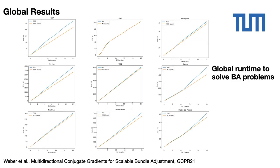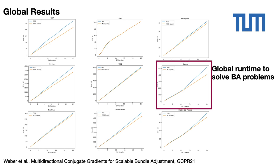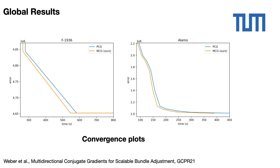Now we present the total runtime with respect to the number of bundle adjustment iterations for each bundle adjustment problem. The blue color corresponds to the PCG algorithm, the orange one to our MCG algorithm. Graphically it is clear that MCG competes with PCG in the worst case — see for example the second top graph — and greatly outperforms PCG in the best case — see for example the third middle graph. The convergence plots of total bundle adjustment cost for two datasets illustrate the fact that MCG and PCG give the same error at each bundle adjustment iteration, but MCG is more efficient in terms of runtime.